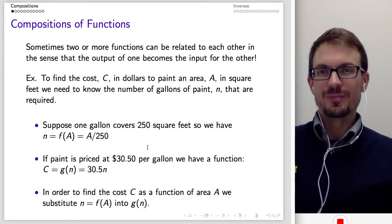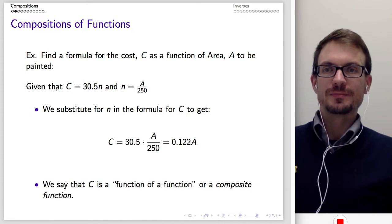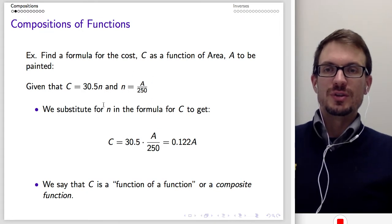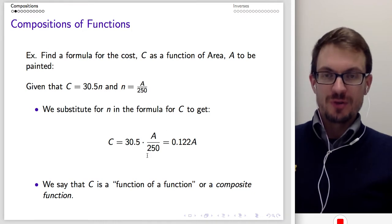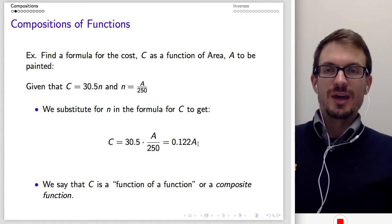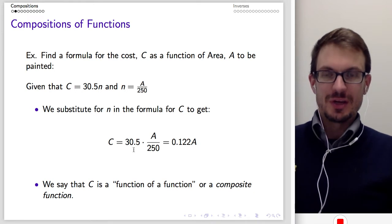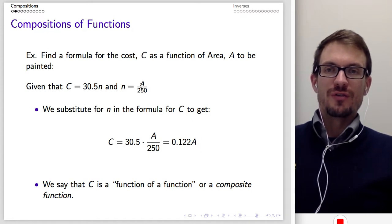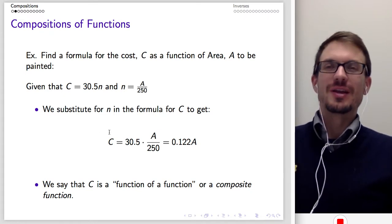That little loop is exactly what we want to build. Let's find the formula for cost as a function of area A. Cost is $30.50 times the number of gallons, and the number of gallons is area divided by 250. Substituting, cost equals $30.50 times A over 250, which simplifies to approximately 0.122 times A. This is a composite function — area enters through one function, kicks out an output, which becomes input to the second function, giving our final cost.